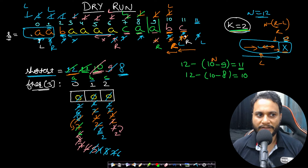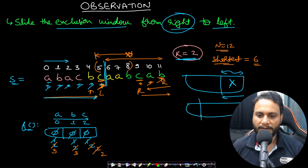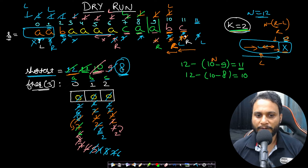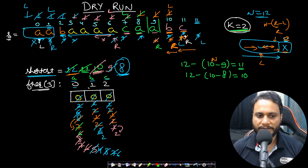To summarize the approach: we found the rightmost exclusion window and slid it from right to left. The rest of the items are included in our result. This is solved using sliding window and two pointers. The string is traversed at most twice, giving O(n) time complexity. Space complexity is O(1) since the frequency array has only 3 elements.